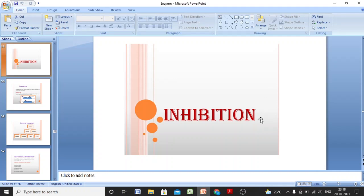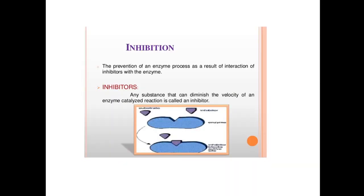Today we study about inhibitions — the prevention of an enzyme process as a result of interaction of an inhibitor with the enzyme. Inhibitors means any substance that can diminish the velocity of an enzyme-catalyzed reaction is called an inhibitor.